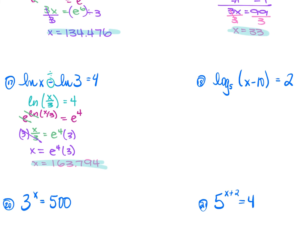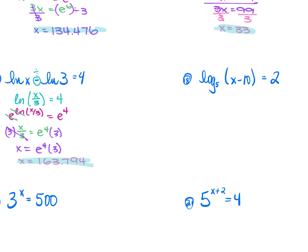For number 18: log₅(x − 10) = 2. Base is 5, so raise 5 to both sides: 5^(log₅(x−10)) = 5². The 5 cancels the log₅, leaving x − 10 = 25. Add 10: x = 35. You can verify: log₅(35−10) = log₅(25), and since 5² = 25, the answer is 2. Correct.